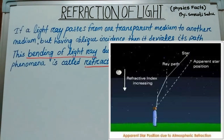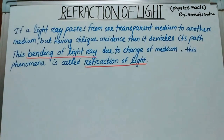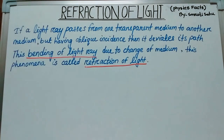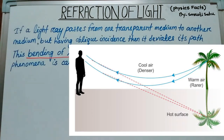Twinkling of stars is also an example of refraction of light — this is called atmospheric refraction. Another example of atmospheric refraction is that the sun is visible before actual sunrise and also after sunset. Another very popular example is mirage formation in deserts, which is also due to refraction of light.